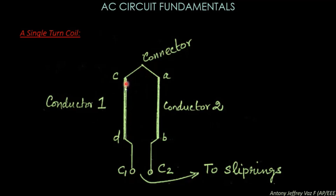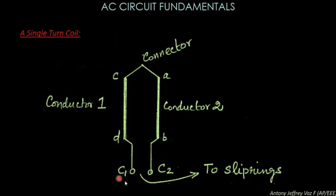If a coil is present, there will be two conductors — the coil has two conductors. After the D end, there are two output terminals from the coil. These two output terminals are connected to the slip rings. There will be two slip rings, C1 and C2, which are connected from the two terminals of the coil, B and D.